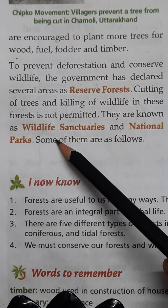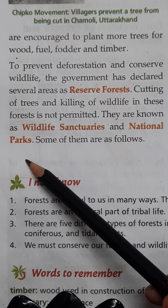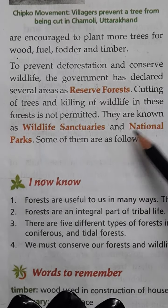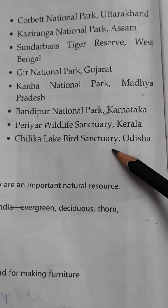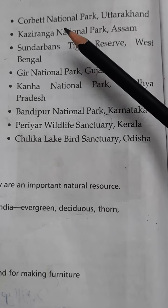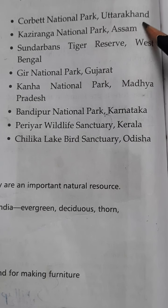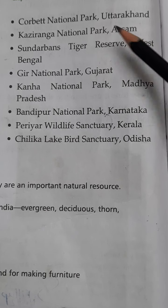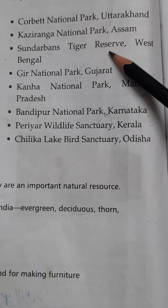Rural people are encouraged so they can benefit from wood, fuel, fodder, and timber. Just look at the picture of Sunderlal Bahuguna, and the Chipko Movement where villagers prevented trees from being cut in Chamoli, Uttarakhand.